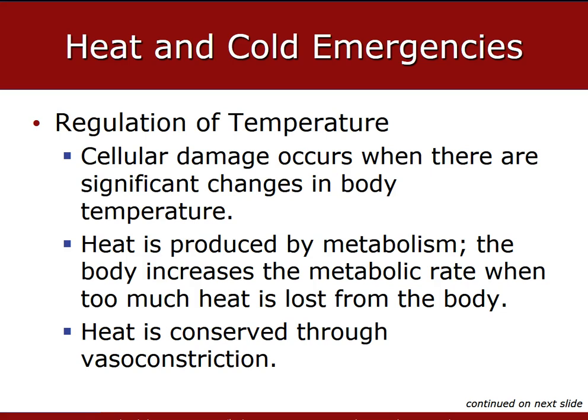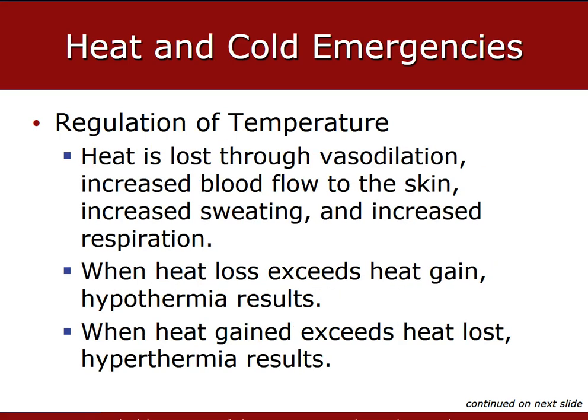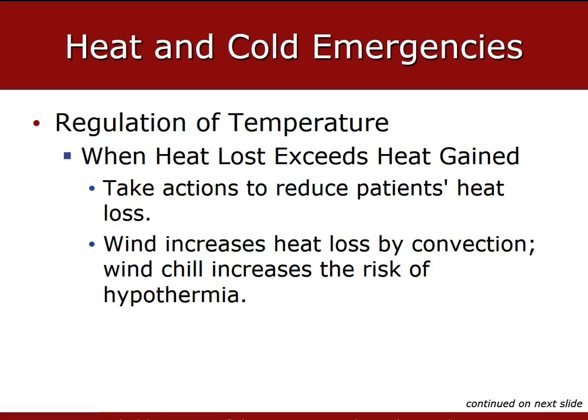Heat is always conserved through vasoconstriction and it also has to do with your metabolic rate — the higher your metabolic rate, the more heat you lose. The body relies on three different body systems — the skin, the cardiovascular system, and the respiratory system — to help maintain a normal temperature when the body becomes too warm. When heat gained exceeds heat loss, hyperthermia results. When heat loss exceeds heat gain, hypothermia results. Some of the actions we may take as an EMS provider include covering the patient, removing them from the source, warm fluids, and passive warming.